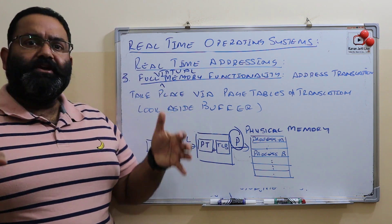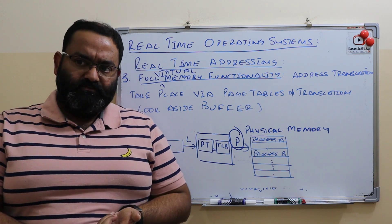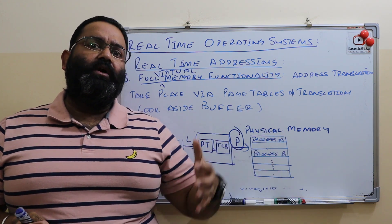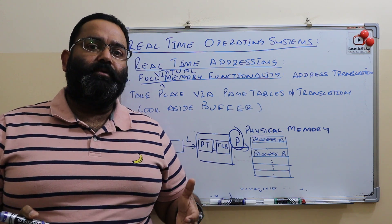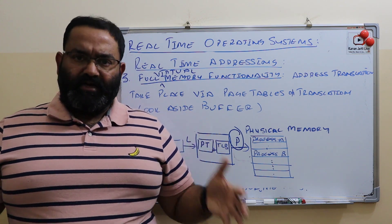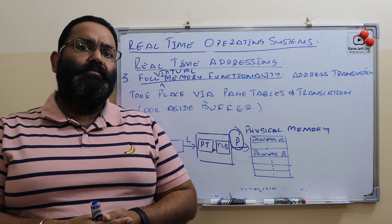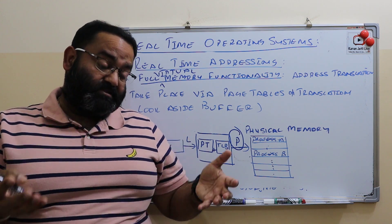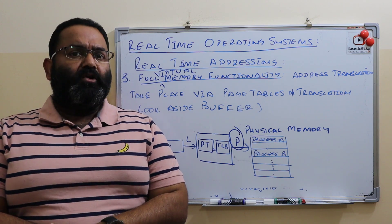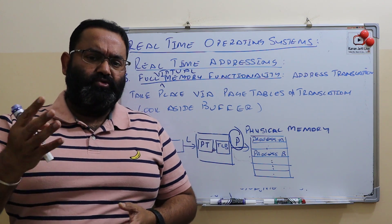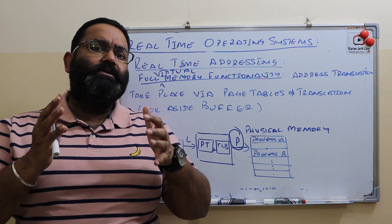That's pretty much for today. We discussed what real-time operating systems are, their different types, their features, and how address translation happens in real-time operating systems. If you like my videos, please subscribe to my channel — I'll be uploading more topics related to IT subjects like operating systems, computer organization, system analysis and design, and so on. Thanks for watching and stay tuned.